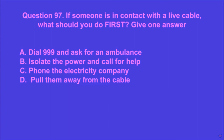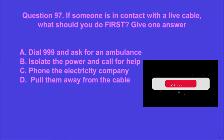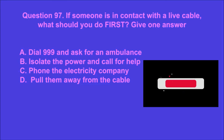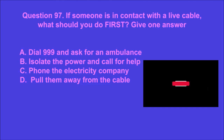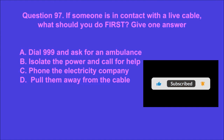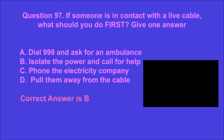Question 97: If someone is in contact with a live cable, what should you do first? Give one answer. A: dial 999 and ask for an ambulance, B: isolate the power and call for help, C: phone the electricity company, D: pull them away from the cable. B is the correct answer.